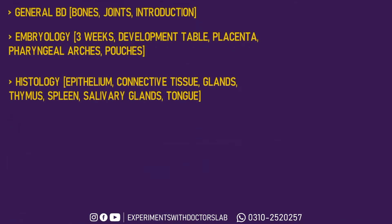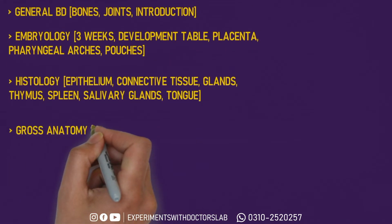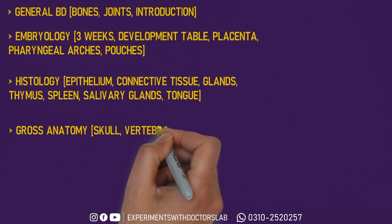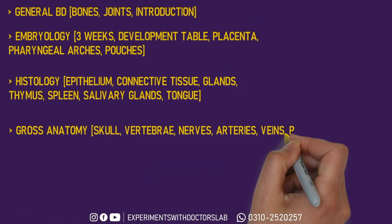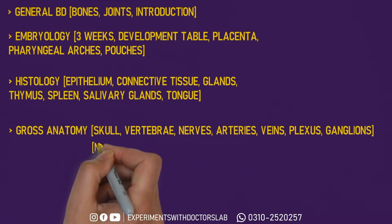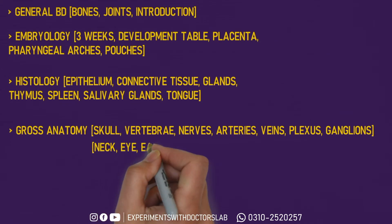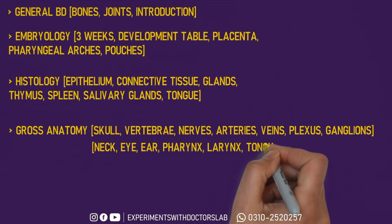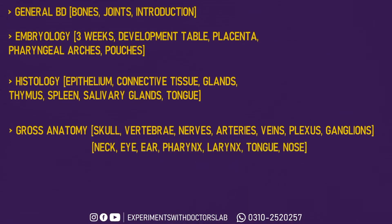Then let's talk about Gross Anatomy. In Gross Anatomy, first cover skull, cervical vertebrae, nerves, arteries, veins, plexuses, and ganglia to build your concepts. Once the concepts are built, then cover neck, eye, ear, pharynx, larynx, tongue, and nose — these will be easily covered with a strong concept base.